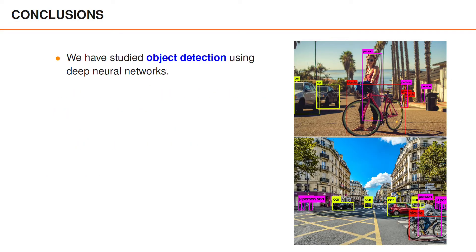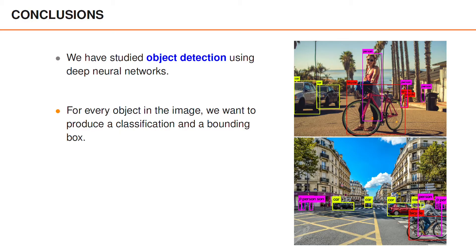Let us end with a brief summary. We have studied object detection using deep neural networks. In particular we have looked at single shot detectors and learned about how they work during both training and testing. The objective in object detection is to produce a classification and a bounding box for every object visible in the input data.